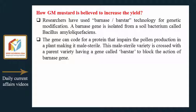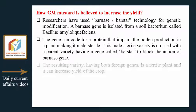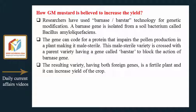This male sterile variety is then crossed with a parent variety carrying a gene called barstar, which blocks the action of the barnase gene. The resulting variety, having both foreign genes, is a fertile plant and can increase the yield of the crop.